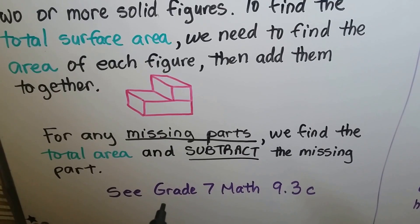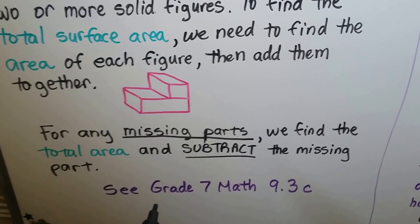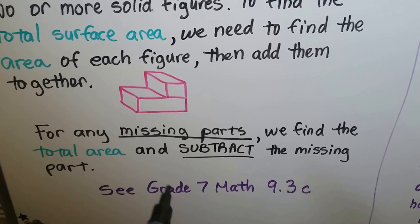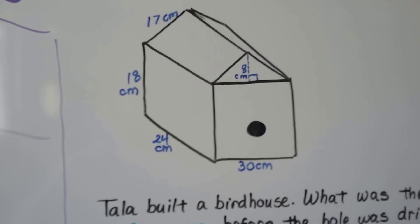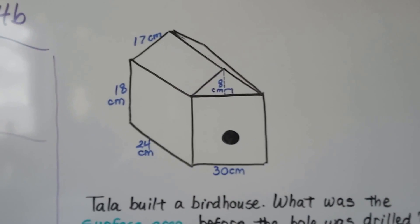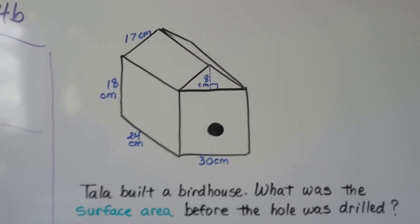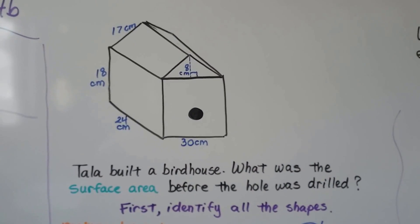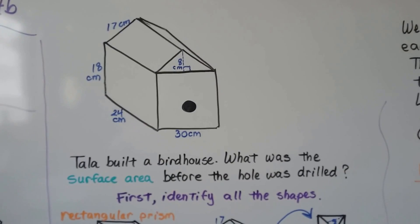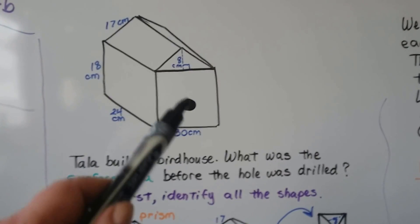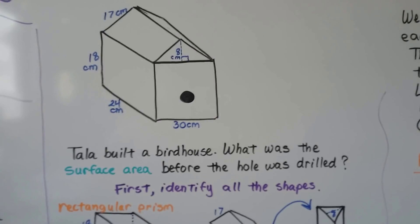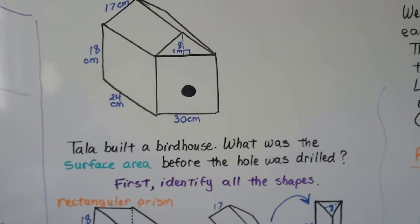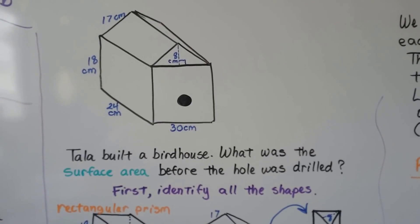You can watch grade 7 math 9.3c — there'll be a link to that one too, and it will go into this more. Here we have a birdhouse with dimensions written in centimeters. Tala built a birdhouse. What was the surface area before the hole was drilled? There's a little hole she drilled for the birds to get inside, but before she drilled it, what was the surface area of this birdhouse?